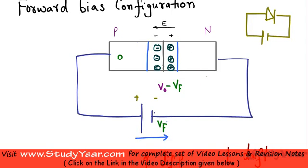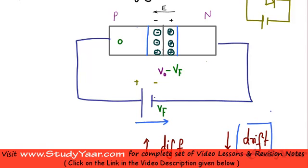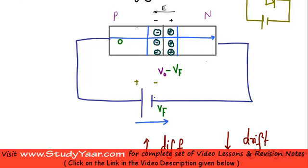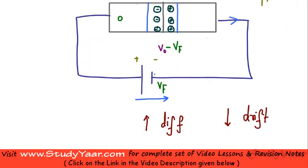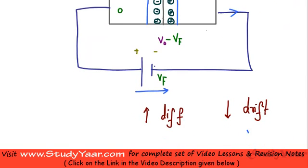Your bias voltage VF has effectively reduced the net electric field. Since your net electric field is reduced, your drift current is automatically reduced, and your diffusion current is increased, since the potential barrier has now gone down. So you have a large amount of charge carriers flowing. When talking about holes, they flow in this direction, and electrons flow in this direction. Therefore, your net current flows in this direction, because diffusion current is greater than your drift current.